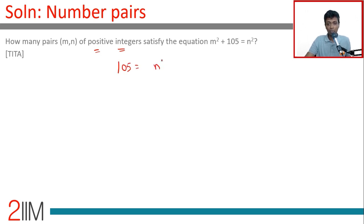as 105 = n² - m². We know these are positive integers, so n is greater than m. This can be broken as (n + m) into (n - m), so product of two natural numbers is 105.